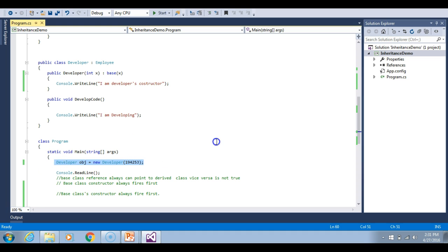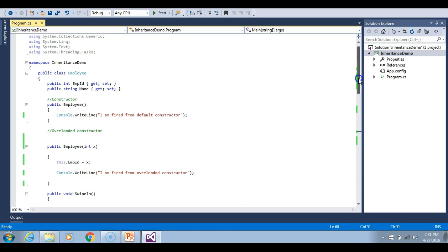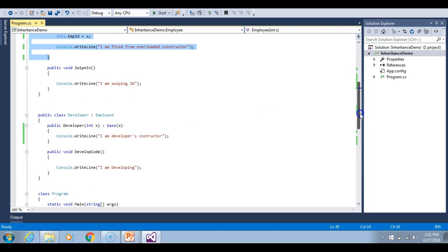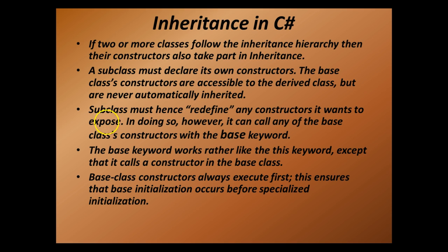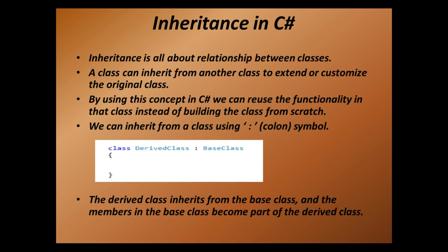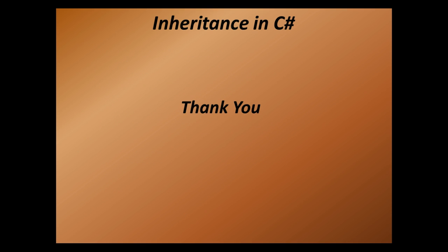To summarize: we can call the overloaded constructor of the base class by using the base keyword. The subclass must redefine any constructor it wants to expose, and in doing so can call any base class constructor with the base keyword. The base class constructor always executes first. That's it for this video — inheritance is used everywhere in C# application development. I hope you understood and enjoyed this video. Please leave a comment if you have any doubts and do subscribe to the channel. Thank you very much.